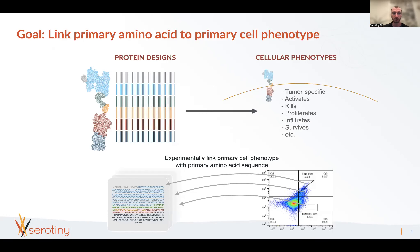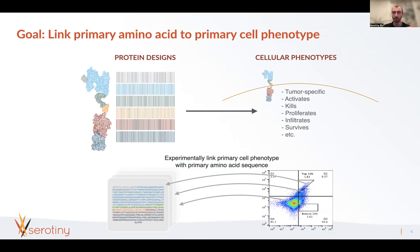The goal at Serotny is to link primary amino acid sequences to primary cell phenotypes. So how do we go from a very large combinatorial set of protein designs to asking how a cell behaves—whether activation is tumor-specific, whether cells kill and proliferate as they should? We experimentally test those cells, where each cell contains a different design, and figure out which designs lead to activation, killing, proliferation, or infiltration.